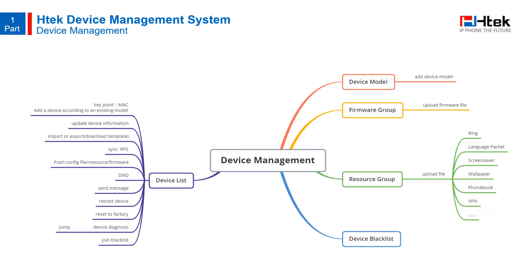You can add a device model and upload firmware files in the firmware group, and upload other types of files in the resources group, such as screen savers, phone books, and so on. You can also add a device to a blacklist.